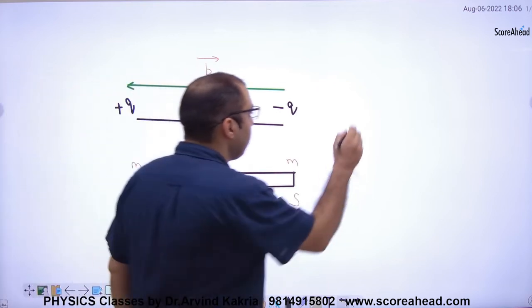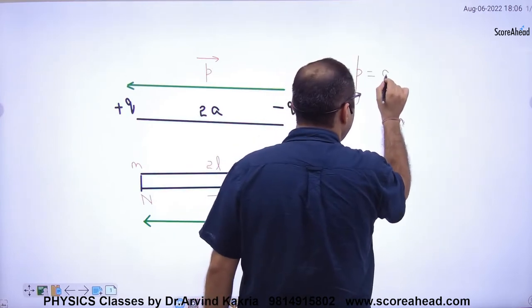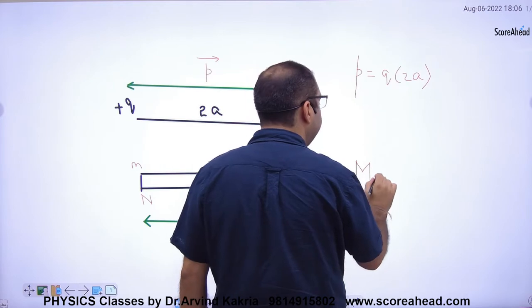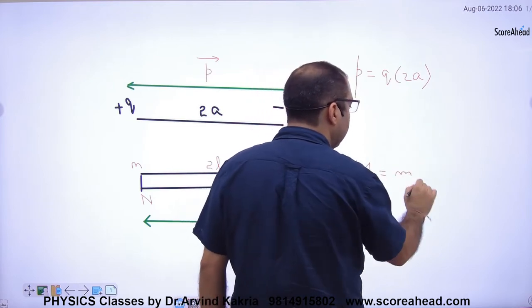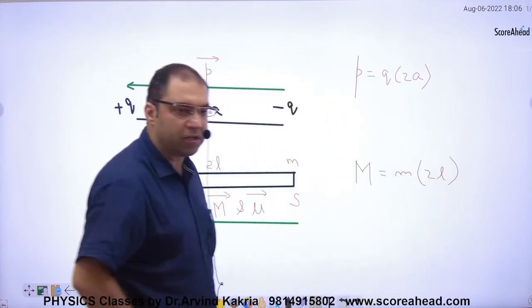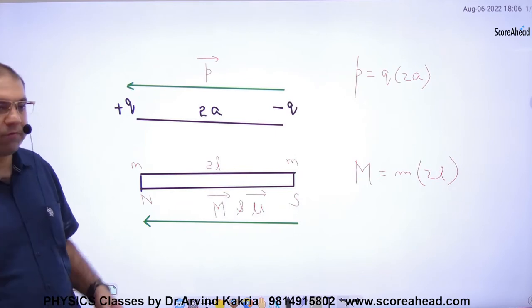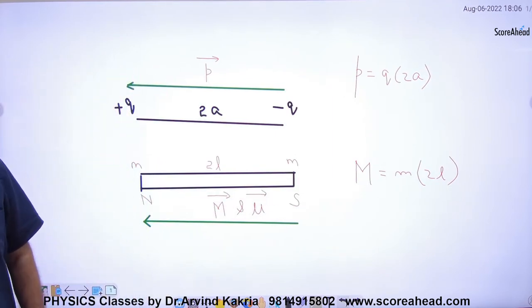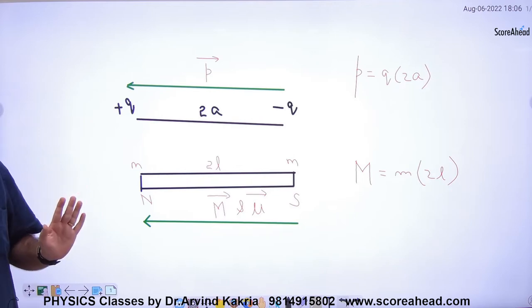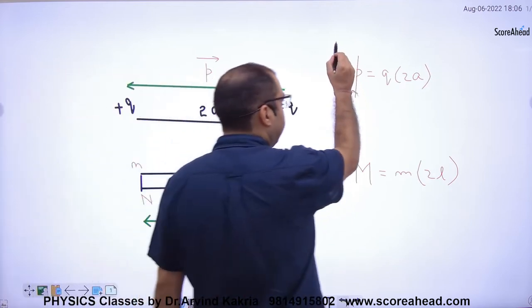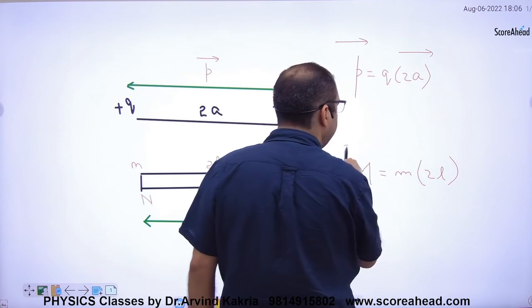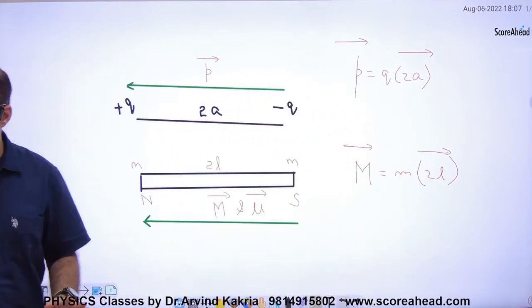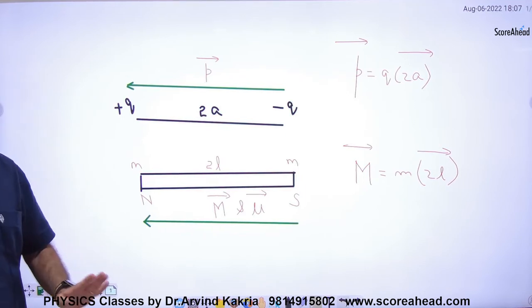The electric dipole moment formula is P equals Q into 2A. For the magnetic dipole moment M, it is small m into 2L. Both are vector quantities. In the same way, magnetic dipoles work just like electric dipoles.